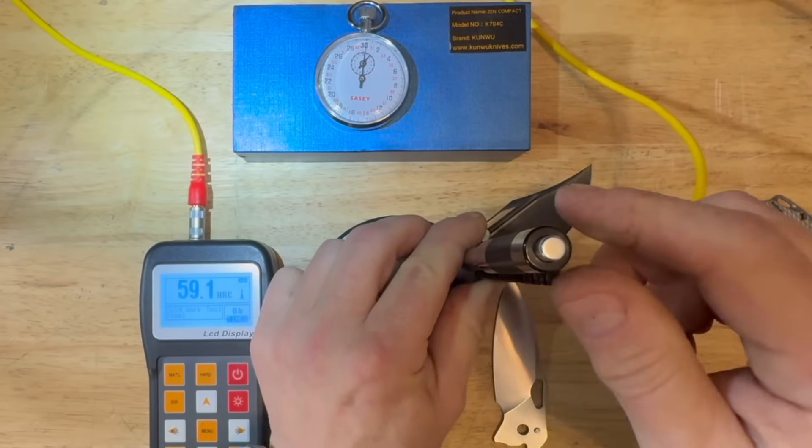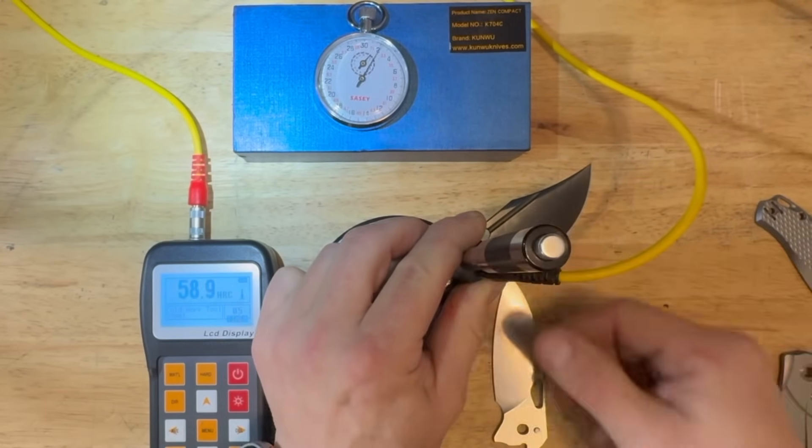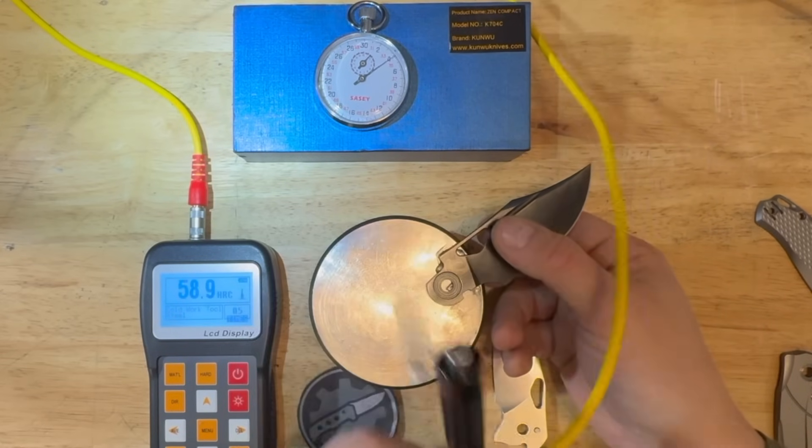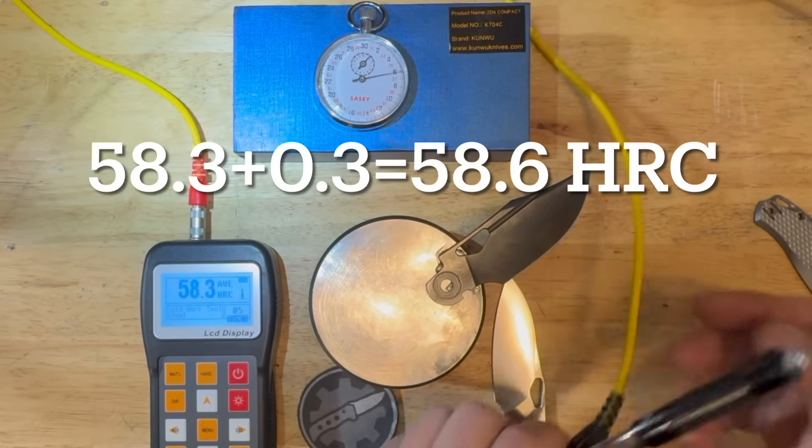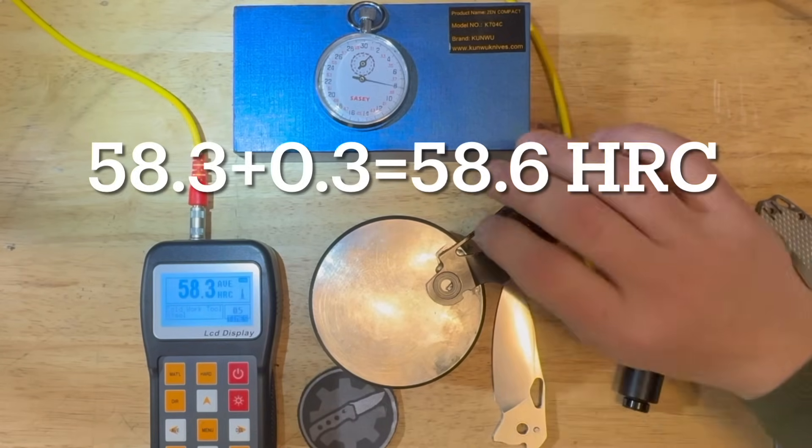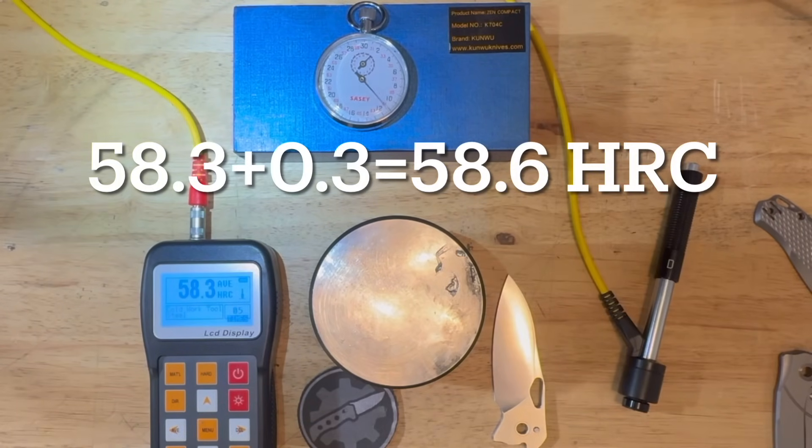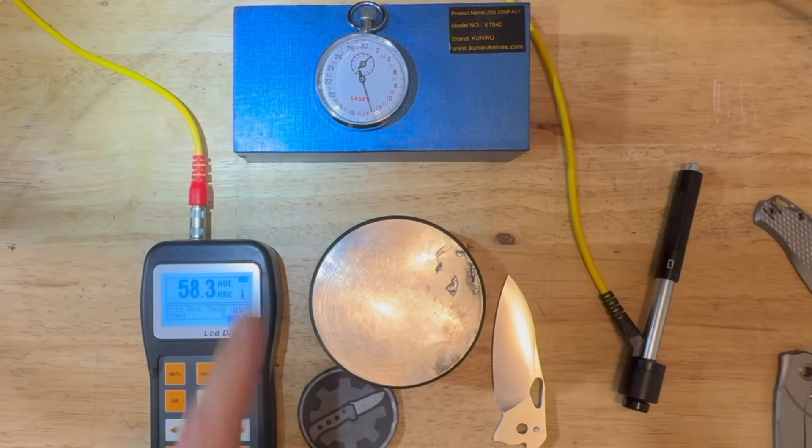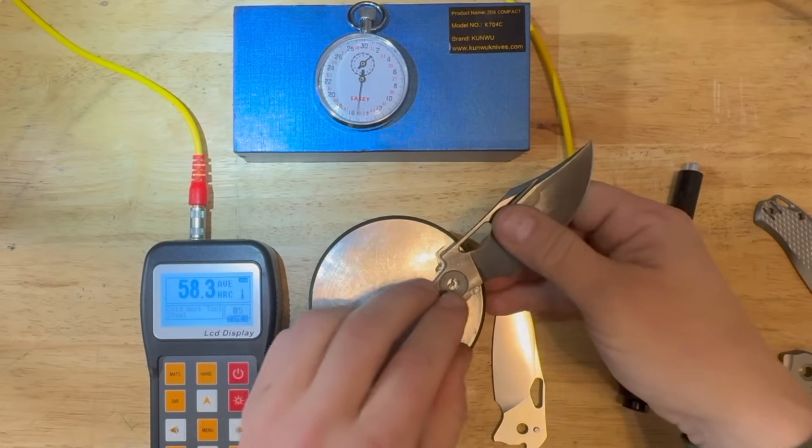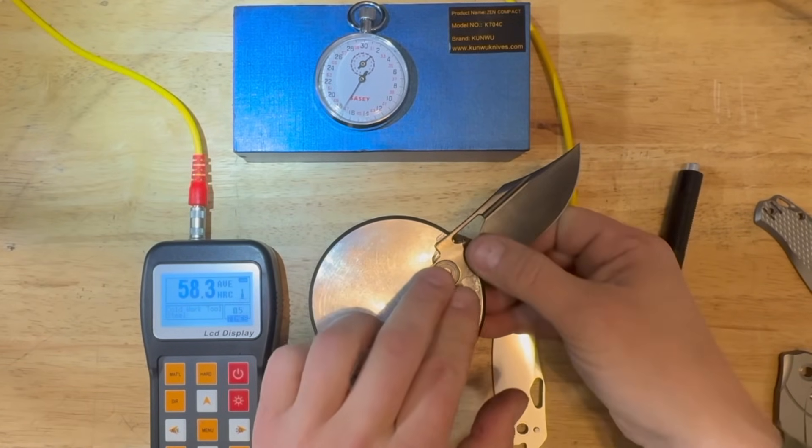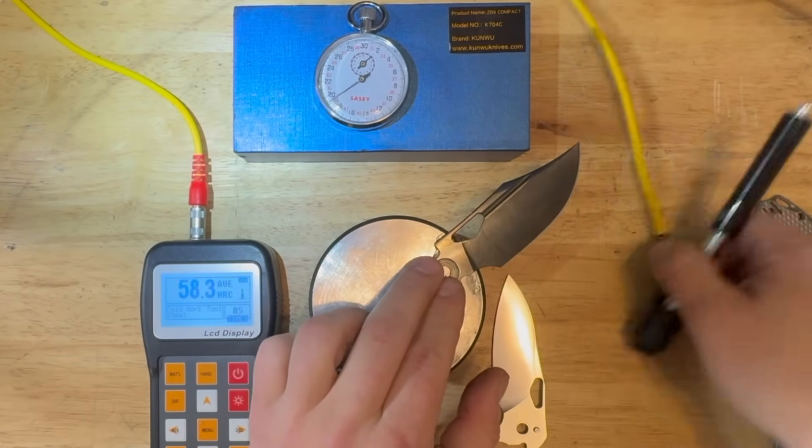For now I hope you're keeping your eye on the Leeb tester. With an average coming out 58.3. And now I'm adding back those 0.3 Rockwell points of error or zero shift. And to remind you the stopwatch is still running to show you that this was an uninterrupted test segment.